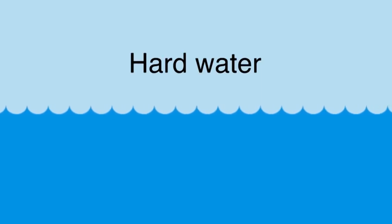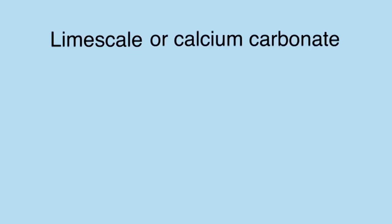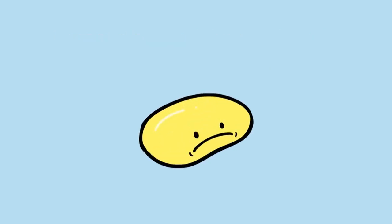Hard water is water that contains calcium and magnesium ions. This is an issue because they form insoluble salts. This can be seen as lime scale or calcium carbonate deposits around water faucets or at the bottom of your water kettle. These ions also make it difficult for soap to lather.